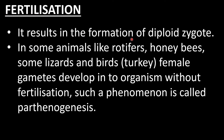Fertilization results in the formation of a diploid zygote — haploid male and female gametes fuse to give rise to the diploid zygote. In some animals like rotifers, honeybees, some lizards, birds such as turkey, the female gamete develops into an organism without fertilization. This phenomenon is called parthenogenesis, observed in honeybees, rotifers, some lizards, and birds like turkey.